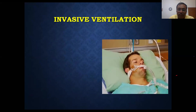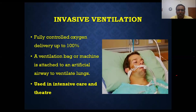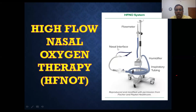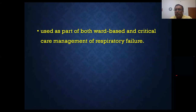Next is non-invasive ventilation (NIV), which requires an ICU setup and costly ventilators, but can deliver 100% oxygen. It can only be used in intensive care and theatre settings. Coming to the HFNO machine itself — we have this machine available. It has a flow meter, a nasal interface, and a humidifier. It can be used in wards as well as in critical care units, and does not need any special personnel to operate — it can be managed by staff nurses.